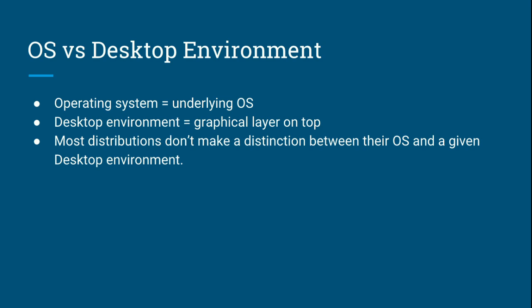One of the first things we need to cover is OS versus desktop environment. The desktop environment in Linux is what makes the graphics look pretty — it's what makes it look the way it looks. The operating system, on the other hand, is the underlying OS, and they're completely detached from each other for the most part. Most distributions don't make a distinction between their OS and a given desktop environment, though a couple do, like Ubuntu and its variants.